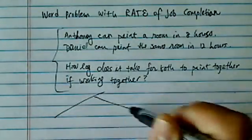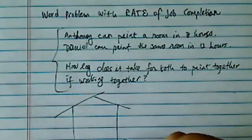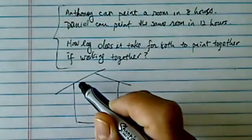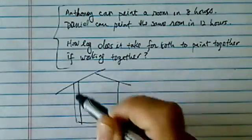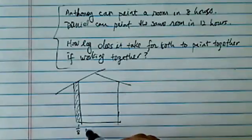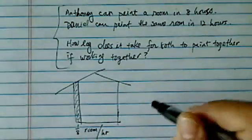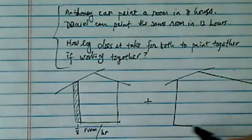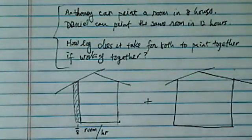So let's get started. If this room, I'm trying to draw a bigger room here. Anthony can paint in 8 hours, which means per hour, he can paint 1/8th of the room per hour. The reason we have to do per hour, because by working together, we have to figure out how fast they can work per hour.